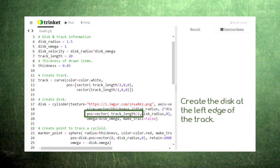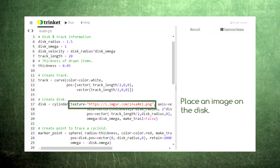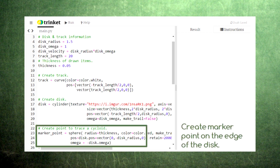We create the disc at the left edge of the track. We'll use the texture feature to place an image on the disc, which will help us see the disc rotate. We then place a small marker point on the edge of the disc.